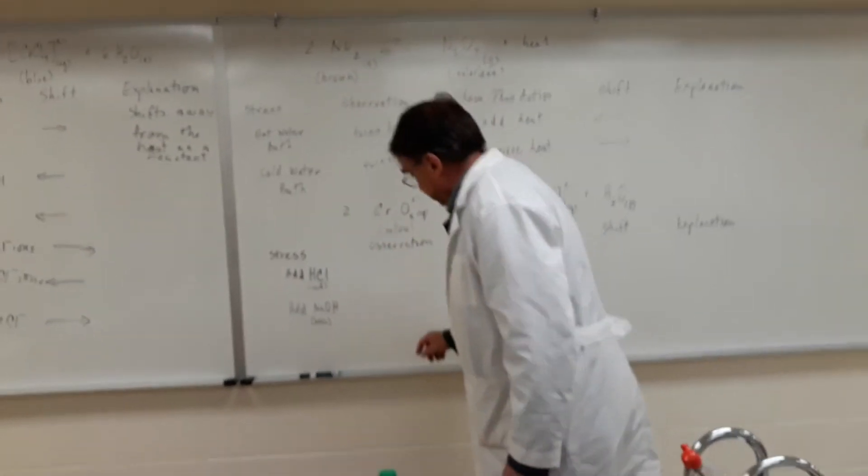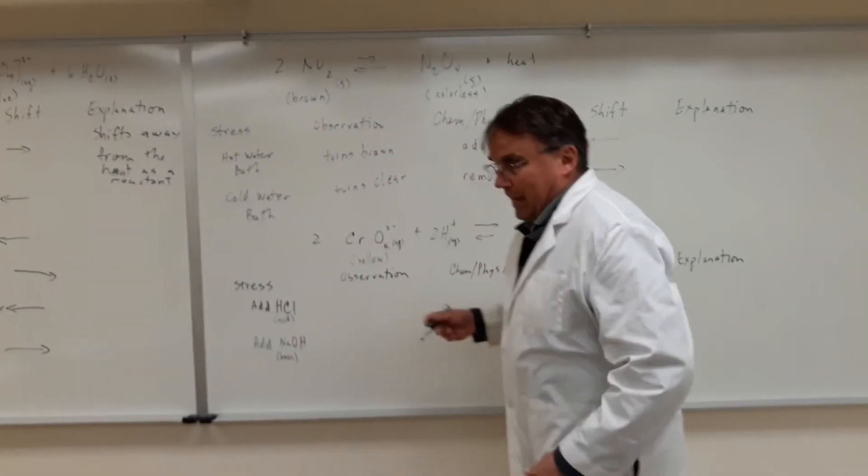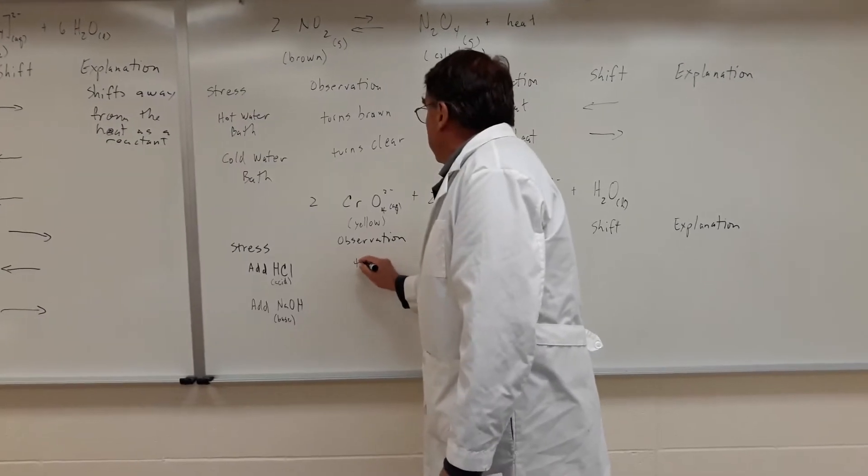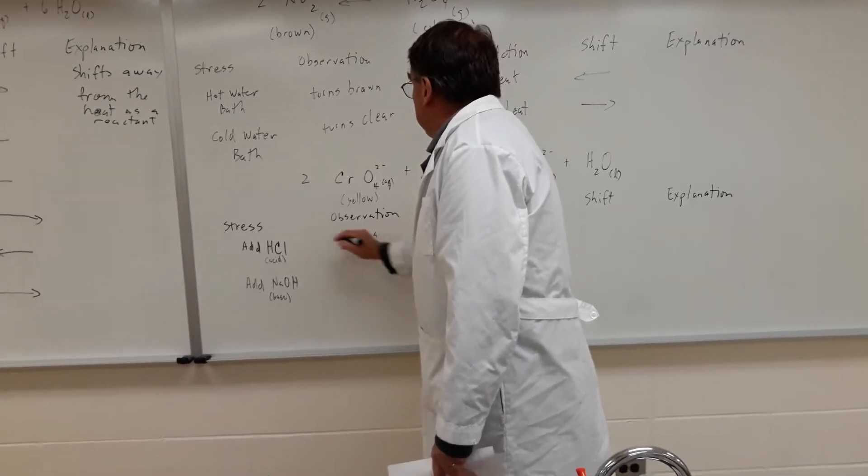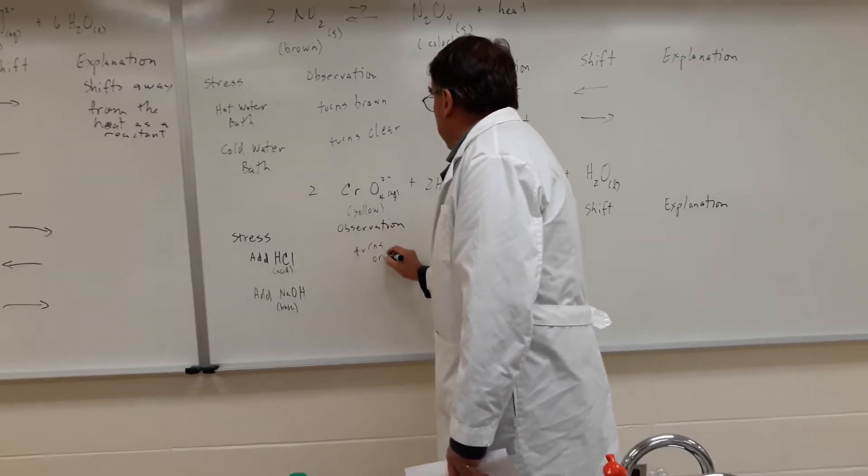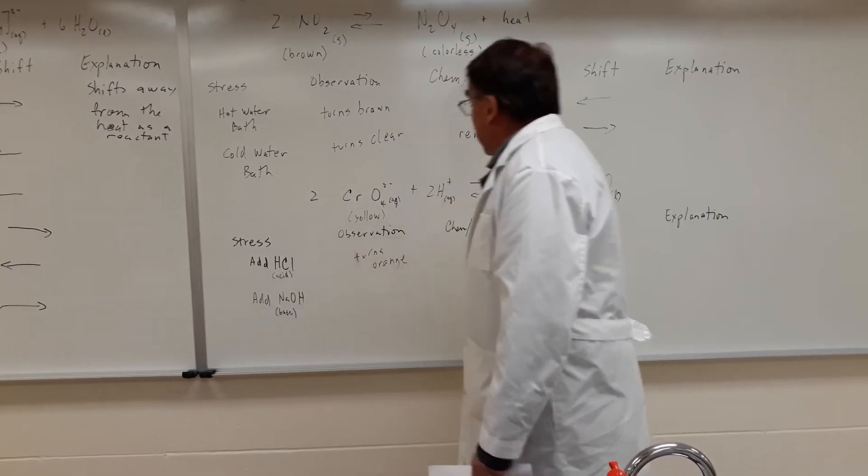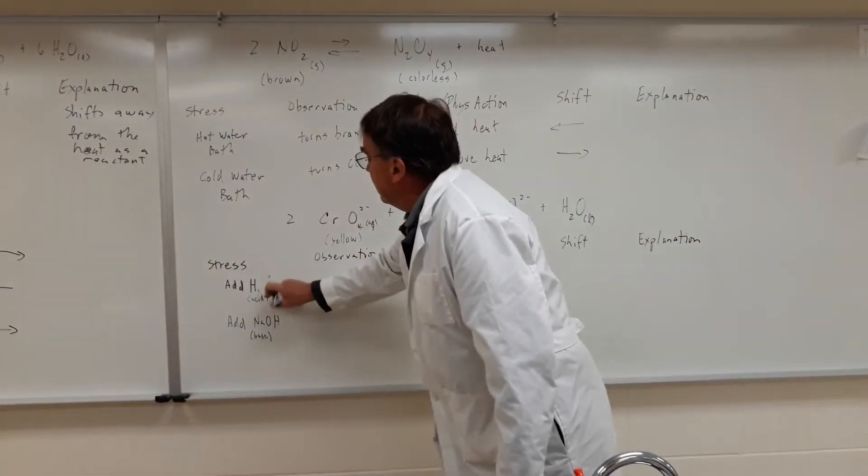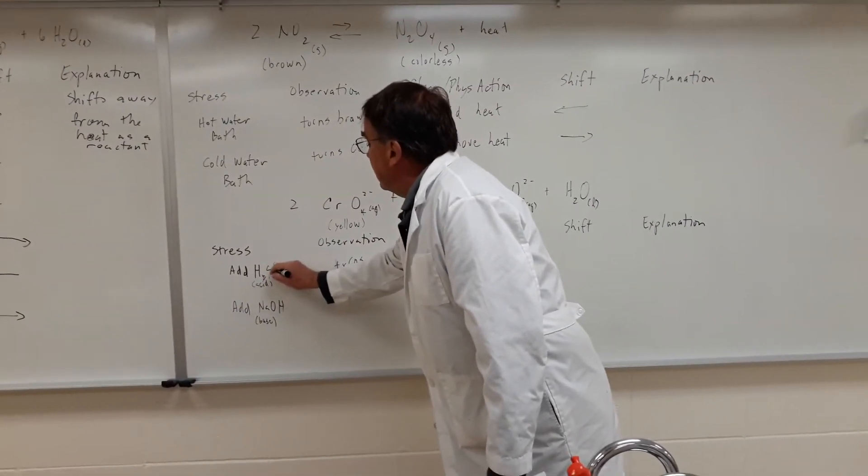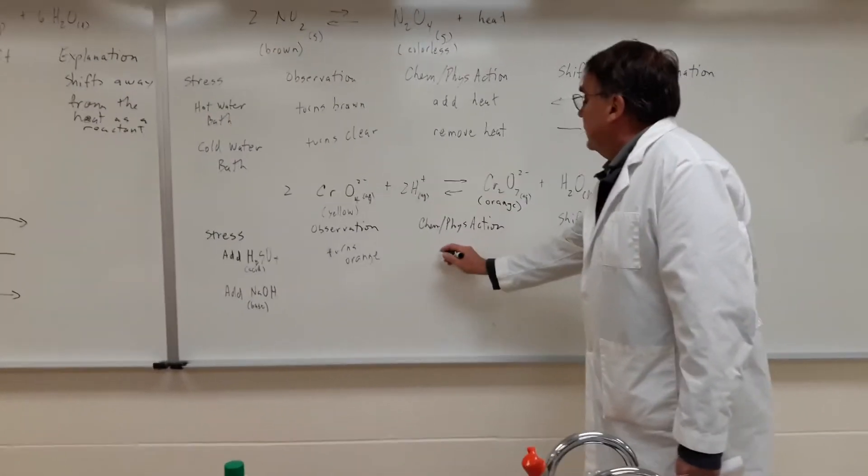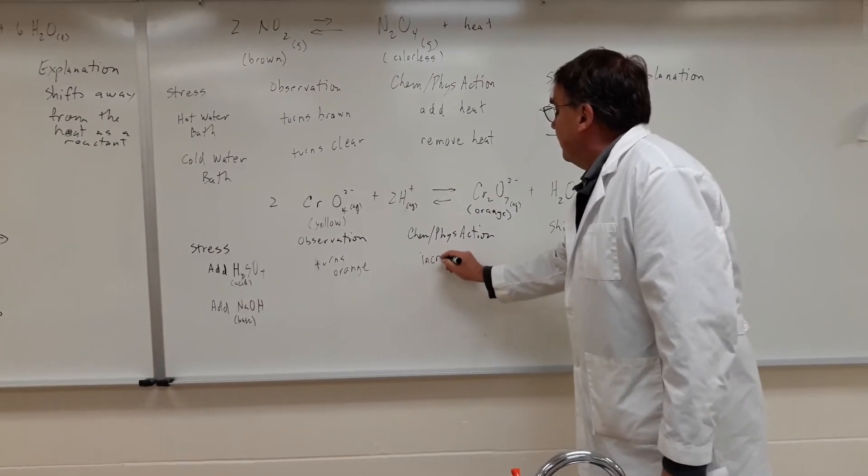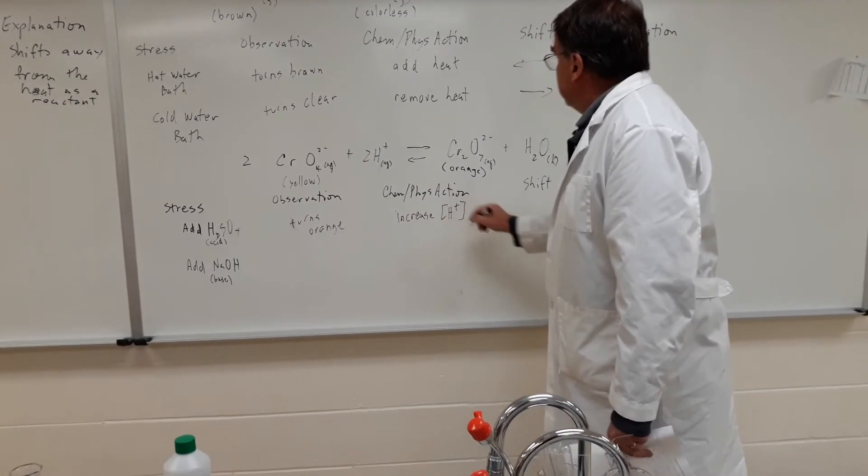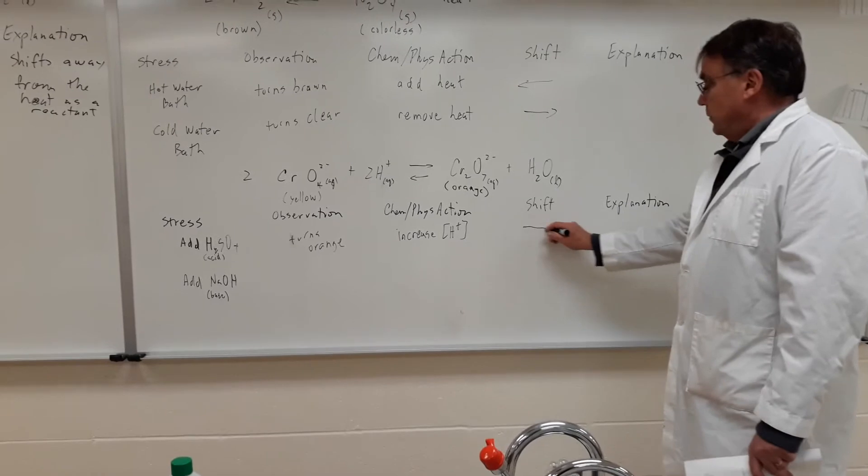So what happened here? When we add HCl, first of all, we saw that it turns orange. Chemical action was to, and we didn't add HCl, excuse me, we add H2SO4. It was to increase the concentration of hydrogen. Shift was towards the orange side.